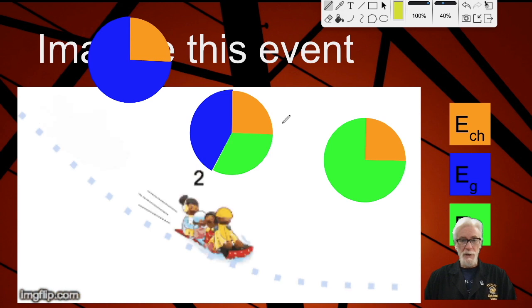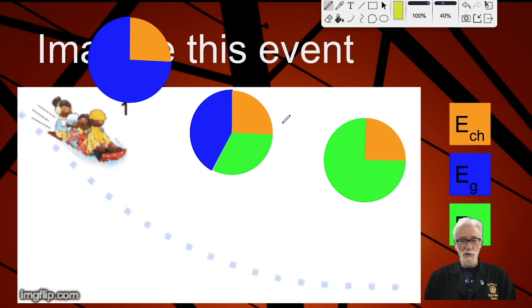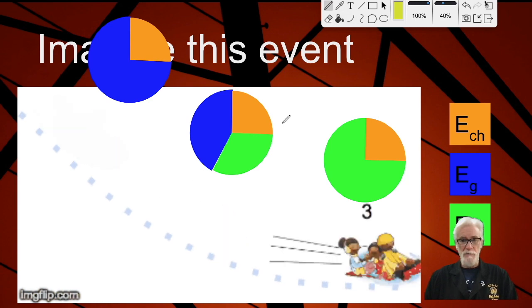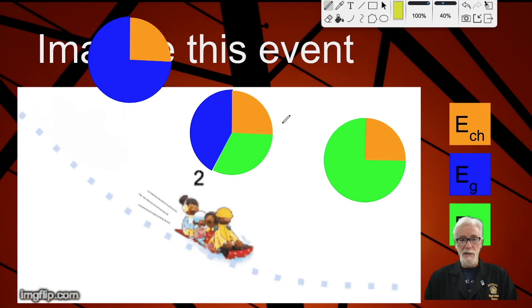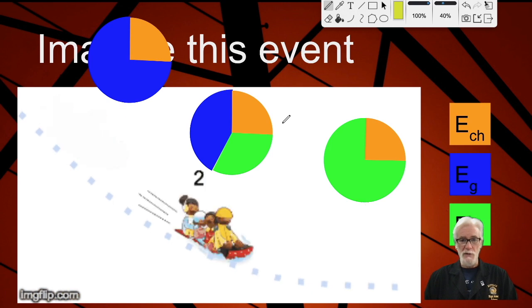At position 3, they are now at the bottom of the hill, so EG has dropped to zero. All of the original EG has been replaced with EK because the sled is now moving faster than it ever has been before, and it's as low as it's ever going to be. ECHEM still hasn't changed because the family still isn't exerting any energy - they're just going down a hill.